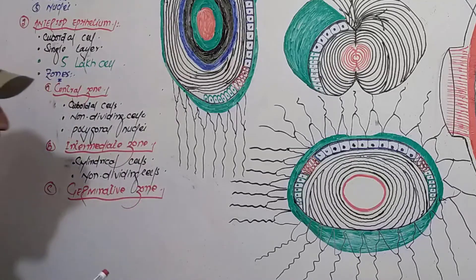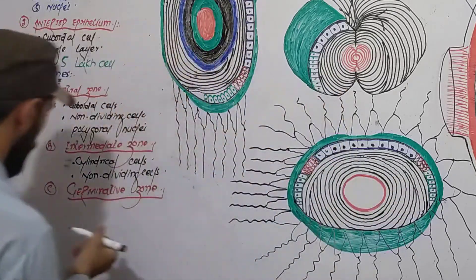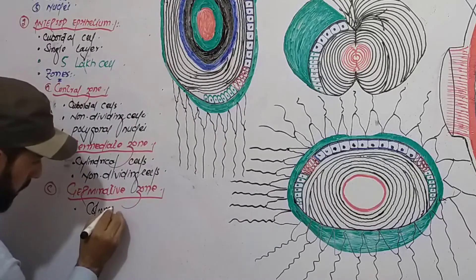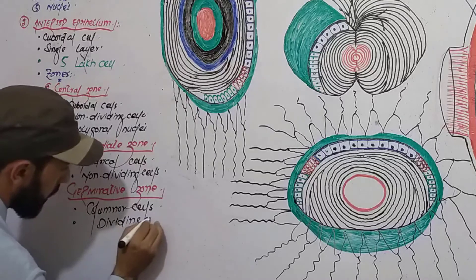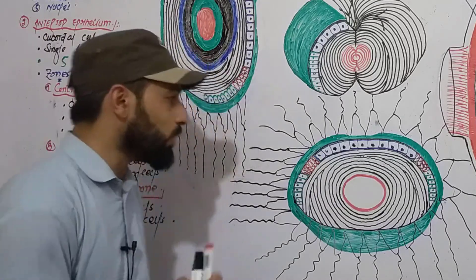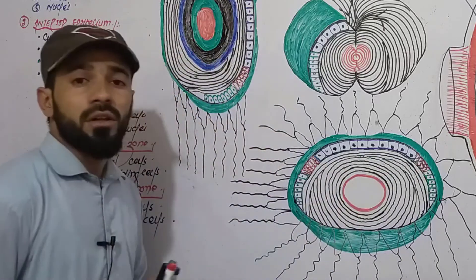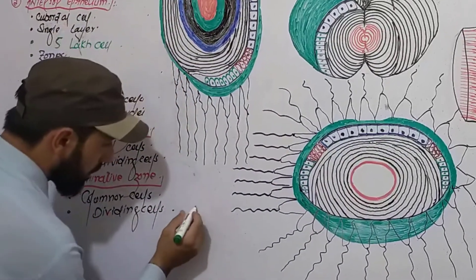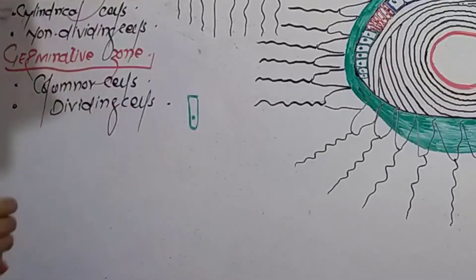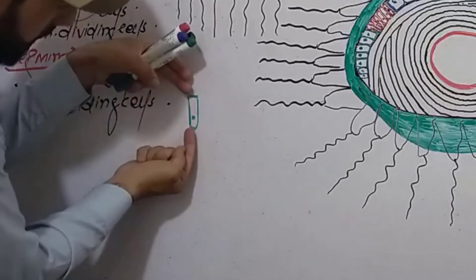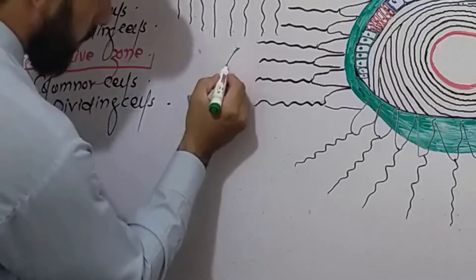The third zone is the germinative zone. The germinative zone mostly contains columnar cells. These are dividing cells — they always reproduce. They are responsible for making all the lens fibers. For example, a columnar cell elongates and elongates, making a fiber-like, thread-like substance.